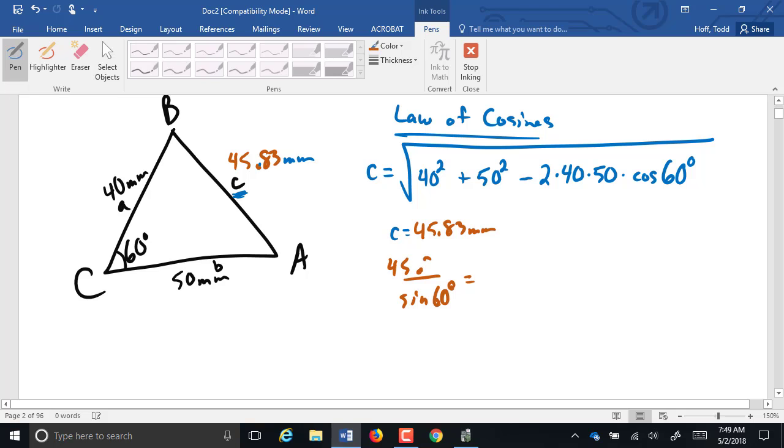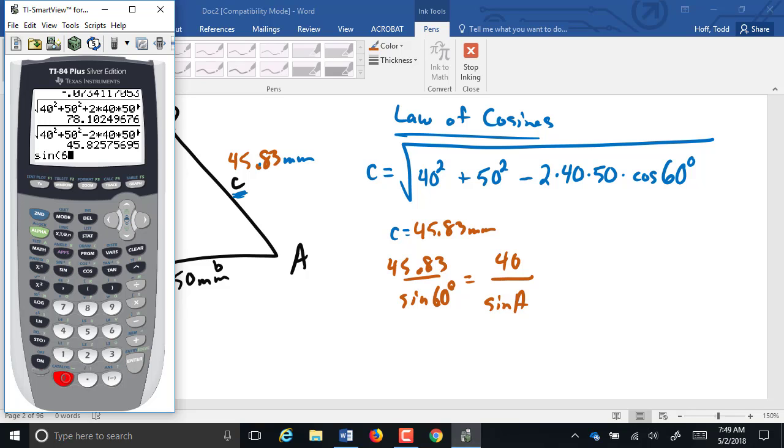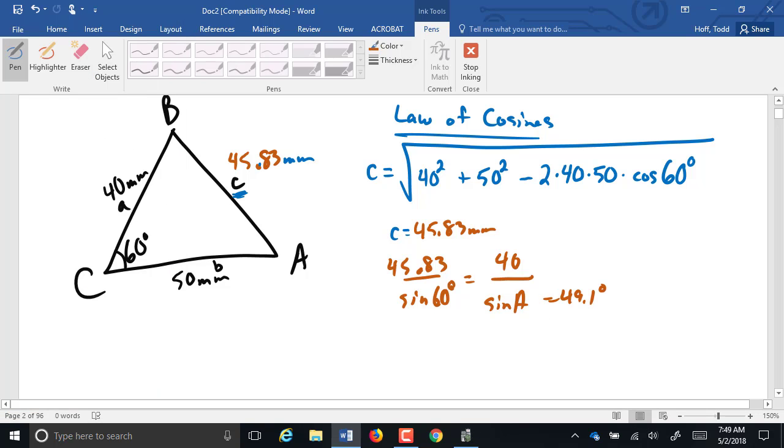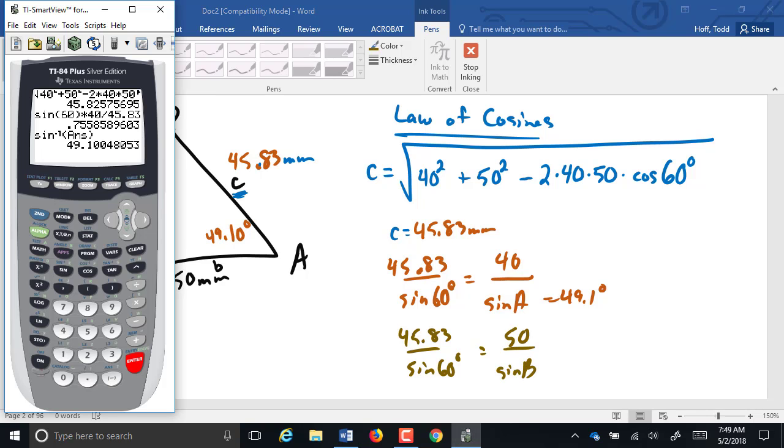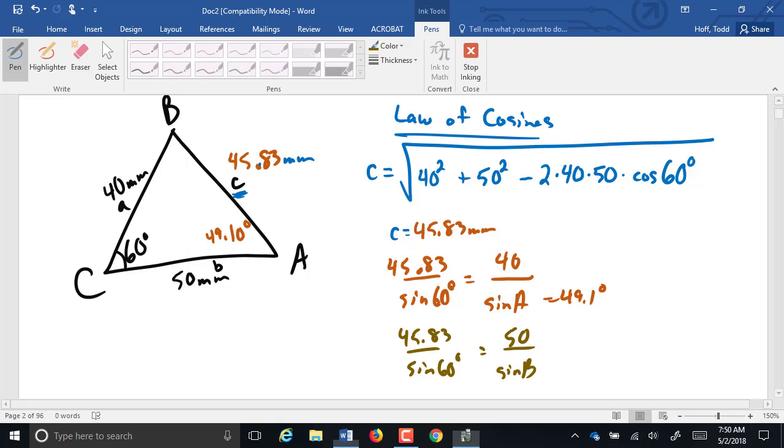I'm going to put 45.83 here over the sine of 60 equals 40 over the sine of A. We know that A is going to be smaller. So sine of 60 times 40 divided by 45.83, and then we've got the inverse sine, which gives us 49.1 degrees. For B, we get 70.88 degrees.